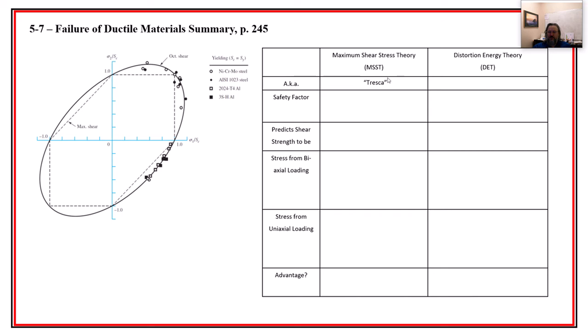So maximum shear stress theory is sometimes known as Tresca, but also known as Guest. Distortion energy theory, remember these as von Mises stress, also a.k.a. octahedral shear. That comes up sometimes in some FEA instead of saying von Mises, they'll call it octahedral stress or something along those lines.